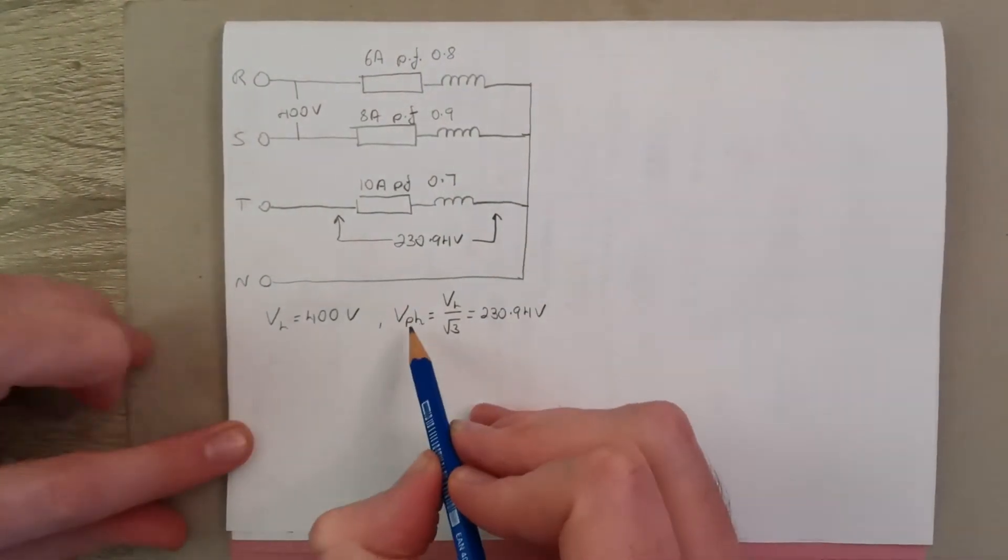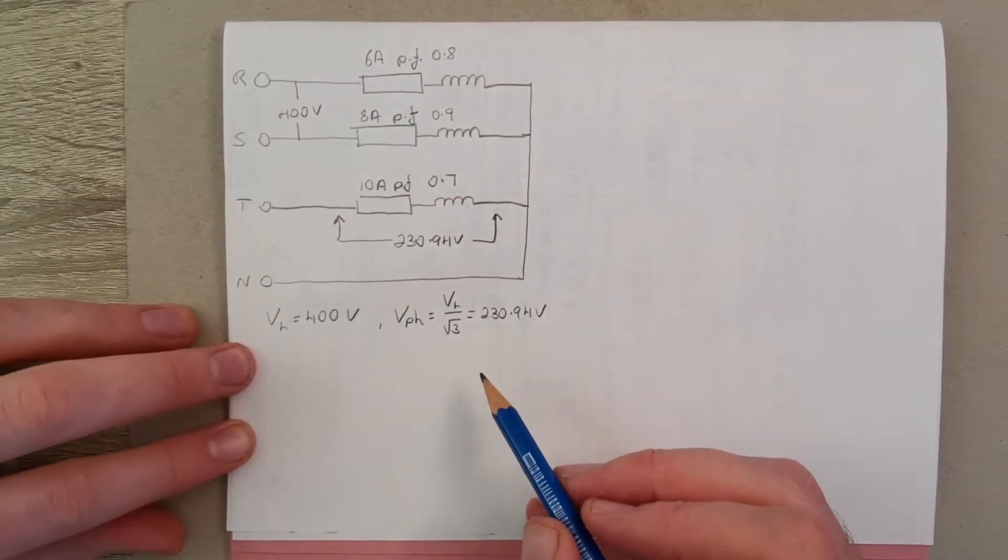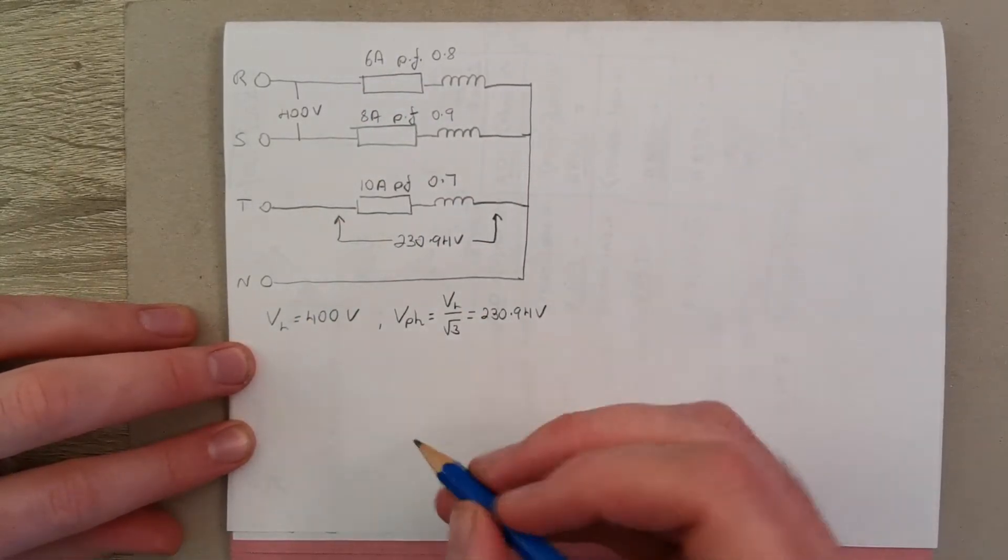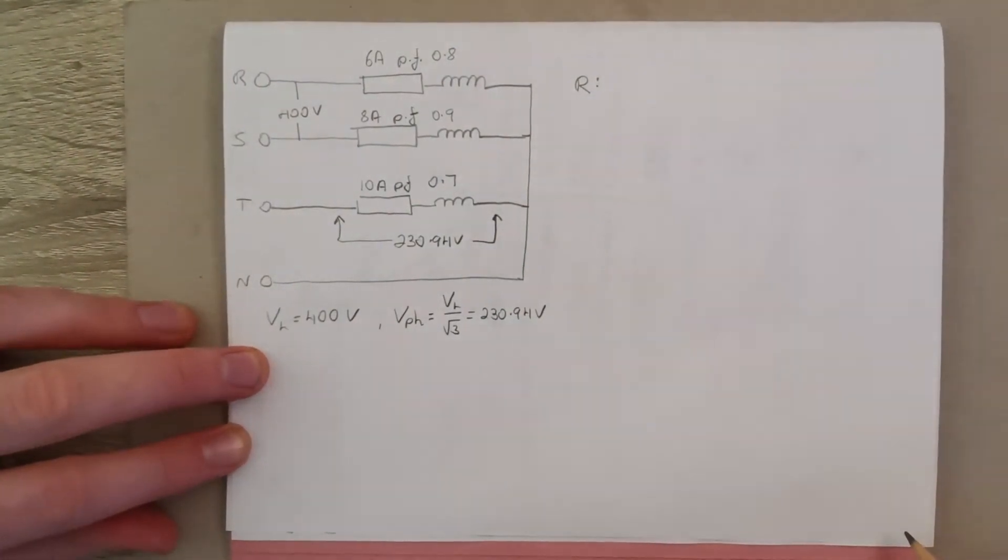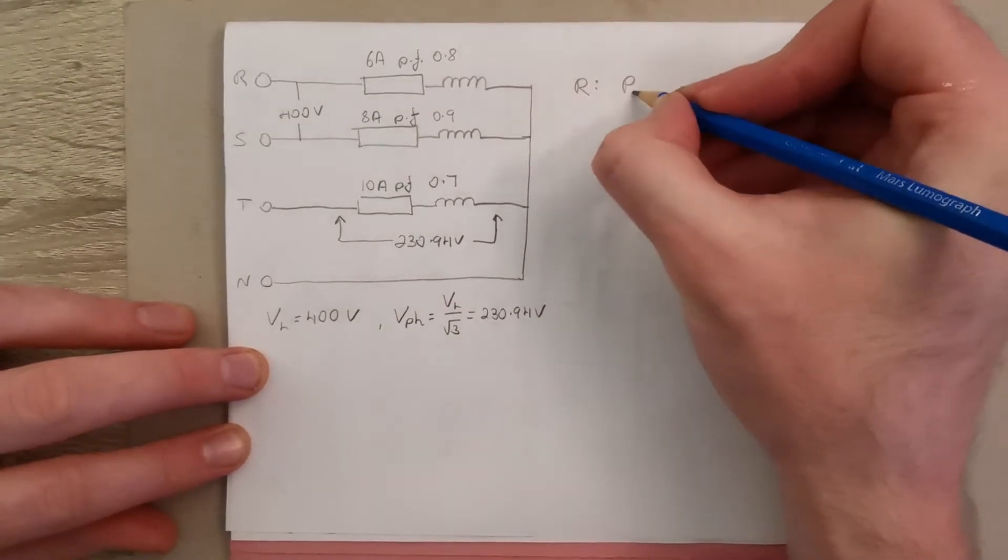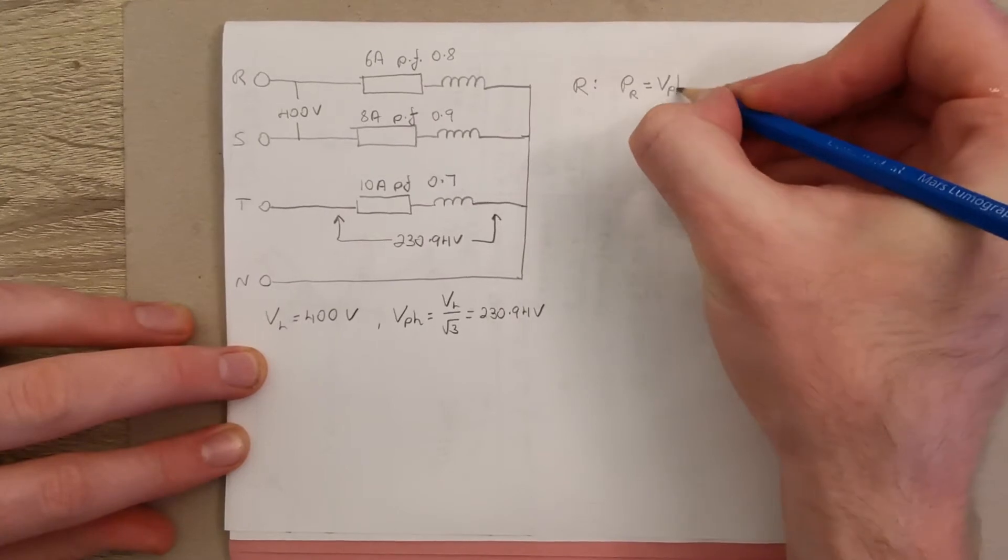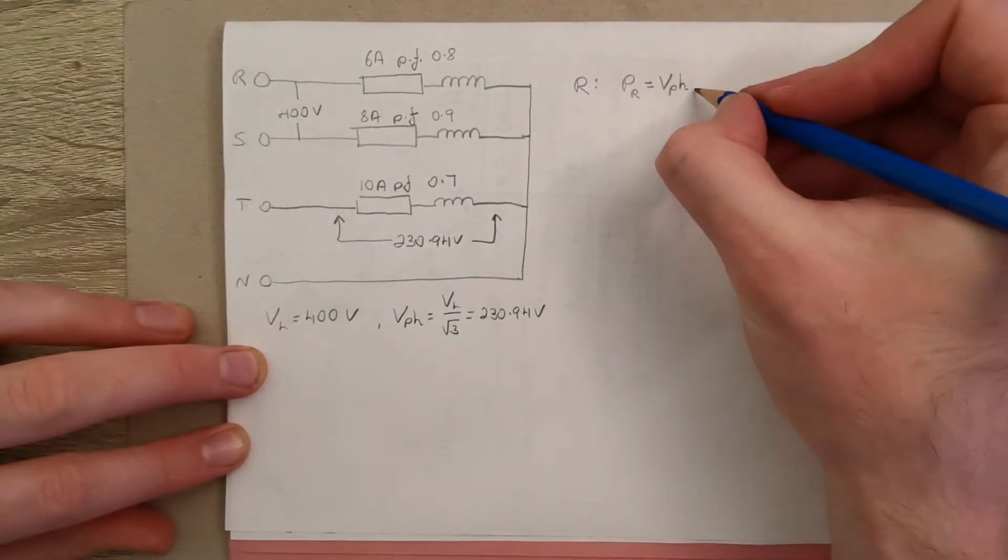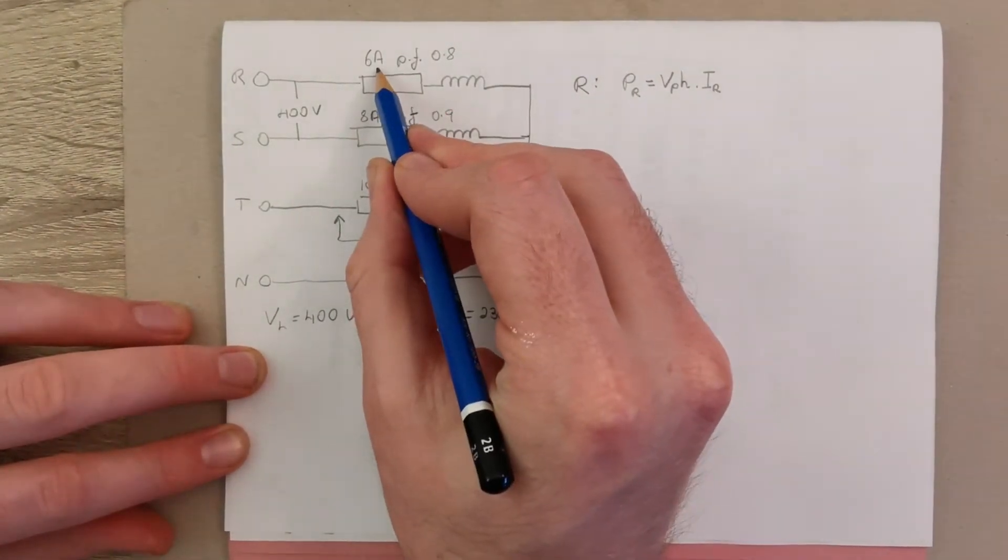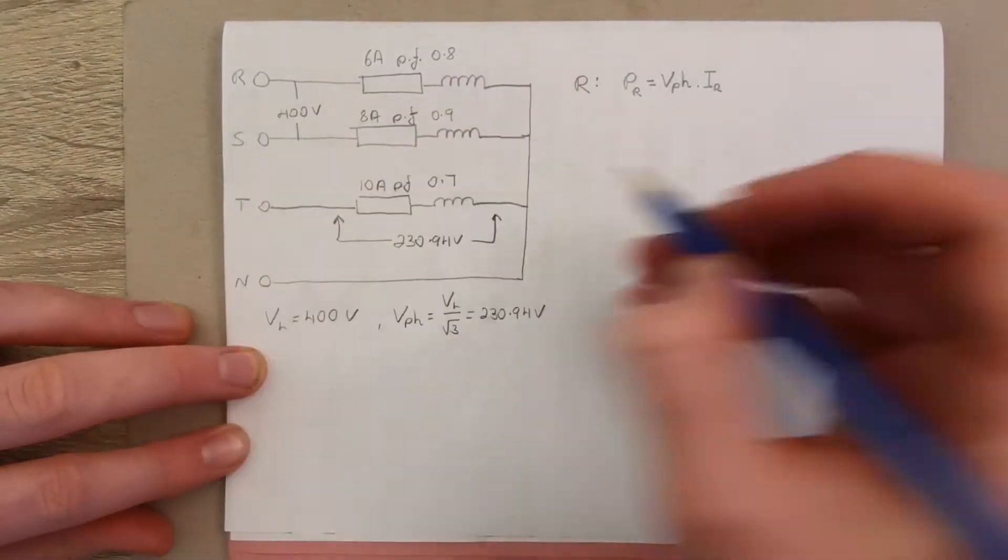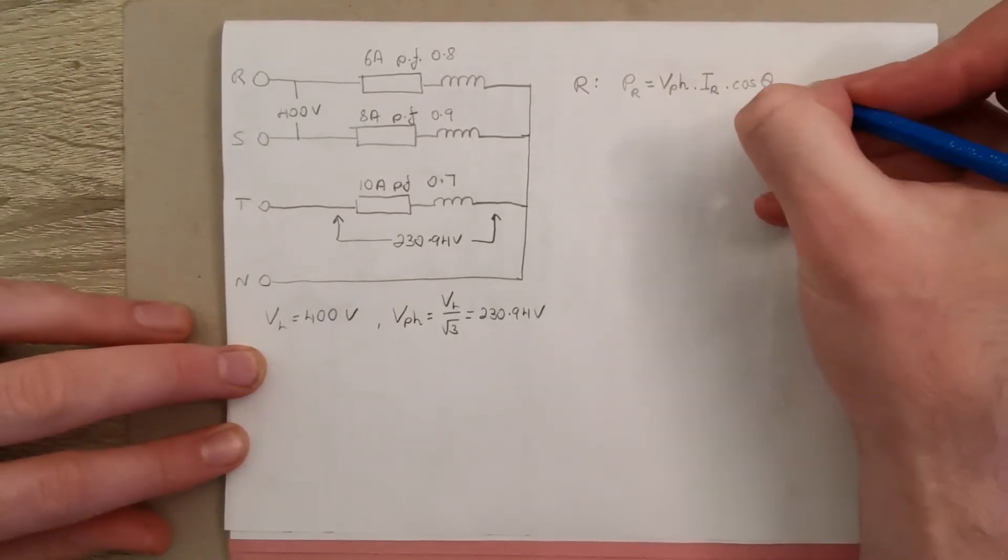So with this phase voltage and the line currents we can work out the power in each load or the power in each phase. So let's do it for the first phase on phase R. And the power in phase R is going to be the voltage across that phase, which is the phase voltage, times the current in that phase, which is the same as the line, times the power factor at that phase.